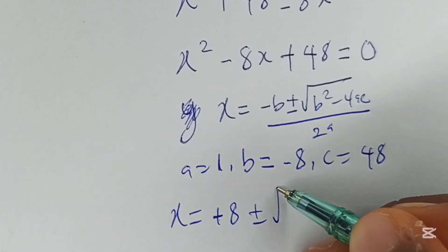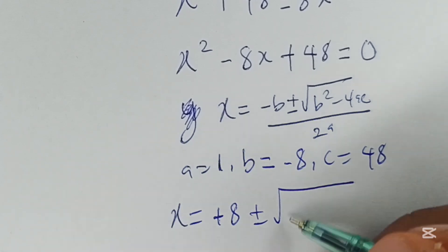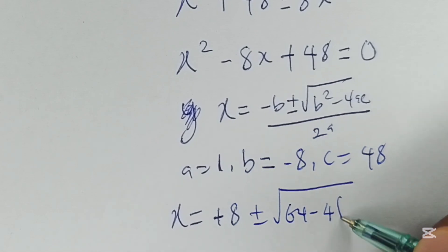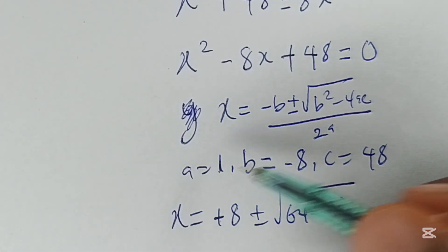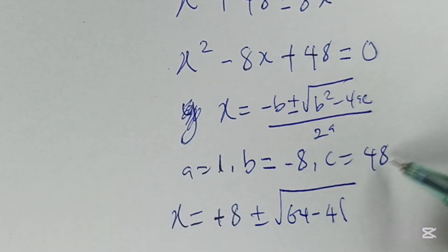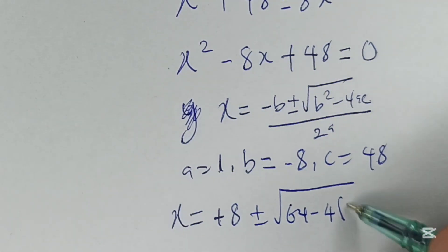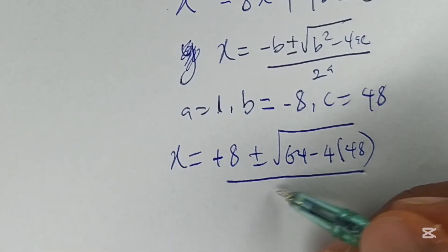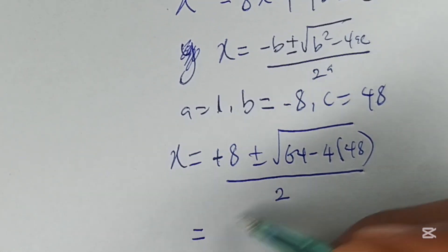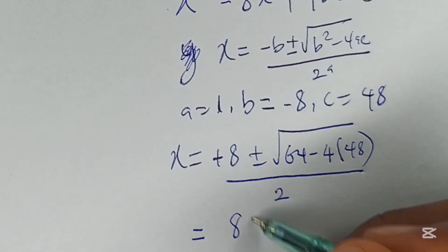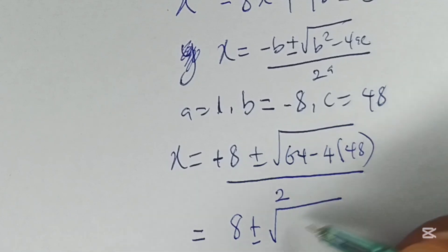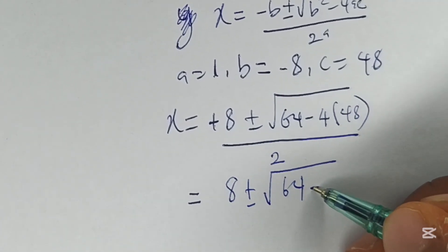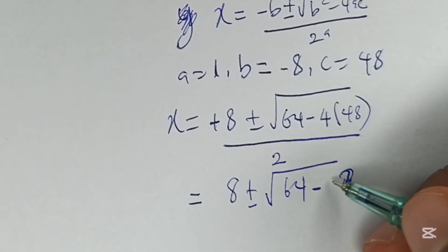Hence x equals negative negative 8, which is positive 8, plus or minus the square root of 8 squared which is 64, minus 4 times 1 (which is a) times 48, all over 2a which is 2. This gives us 8 plus or minus the square root of 64 minus 192, all over 2.